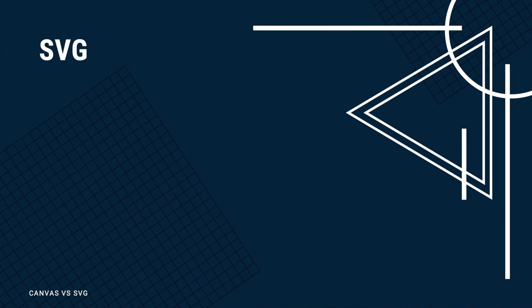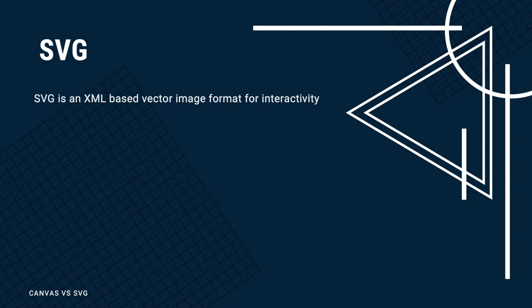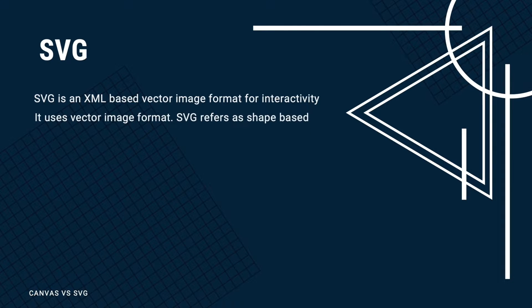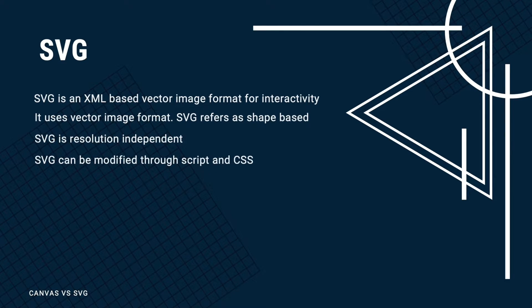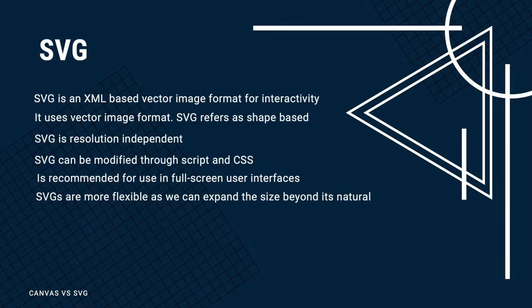SVG was developed to create vector graphics. It is an XML file format, and as it is just XML it is readable by both machines and humans. It is shape-based and scalable, making it far better for complex graphics like building and engineering diagrams, organizational charts, biological diagrams, and so on. For such use cases, SVG would be a better choice.